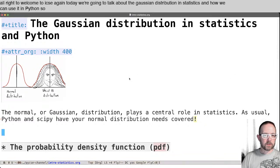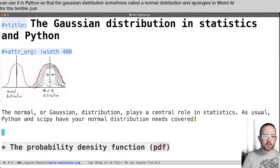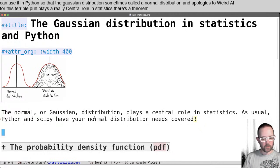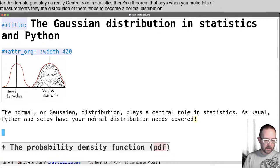So the Gaussian distribution, sometimes called a normal distribution, and apologies to Weird Al for this terrible pun, plays a really central role in statistics. There's a theorem that says when you make lots of measurements, the distribution of them tends to become a normal distribution, and there's a lot of really powerful things we can use it for.